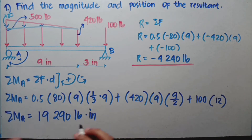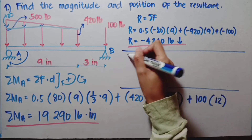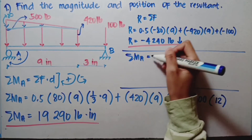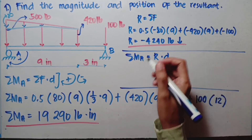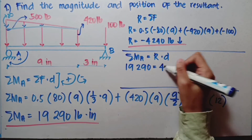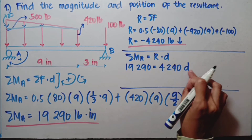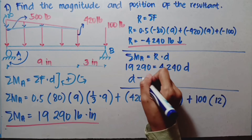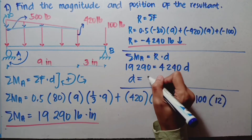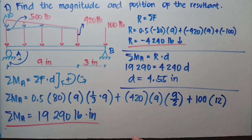Now we have the moment for this figure. Let's find the location of the resultant. For summation of moment at A — since we took the moment at A — equals the resultant times its moment arm. Our summation of moment at A is 19,290 pound-inches, which equals our resultant of 4,240 pounds times the distance D. When we calculate this, D comes out to 4.55 inches. Meaning the resultant can be found 4.55 inches from where we took the moment, which is A.